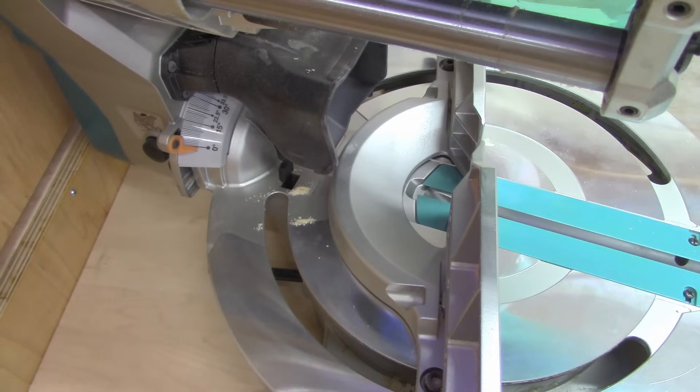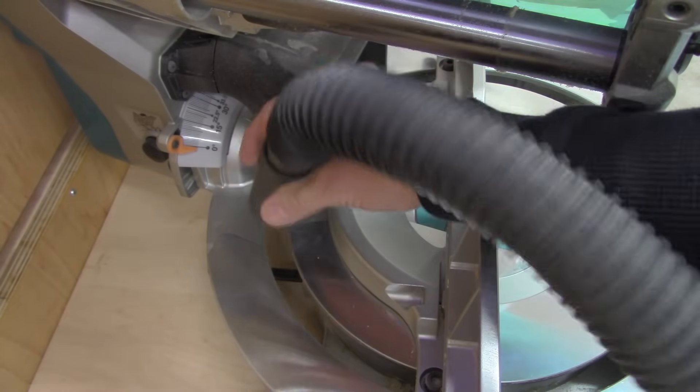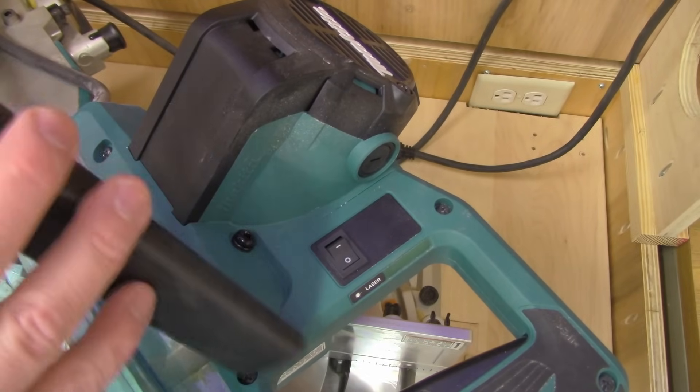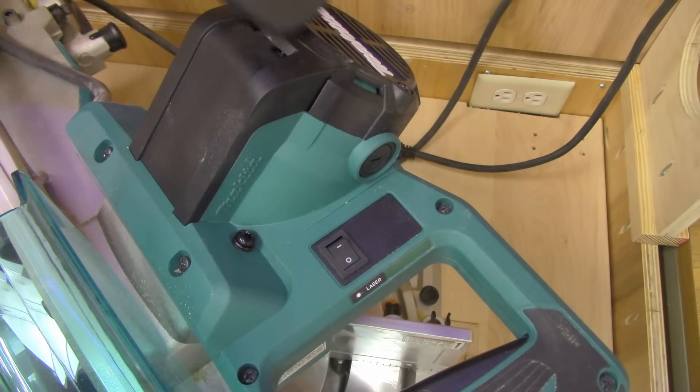Next thing, get your shop vac and get everything cleaned up. After you get everything cleaned up, take the time to lubricate all your pivot points, your springs, and things like that. If you have any suggestions or some product that you like to use on your miter saw, put it in the comments down below. If you're not sure what to use, just look in the manual that came with your saw. I'm sure they'll recommend a lubricant.